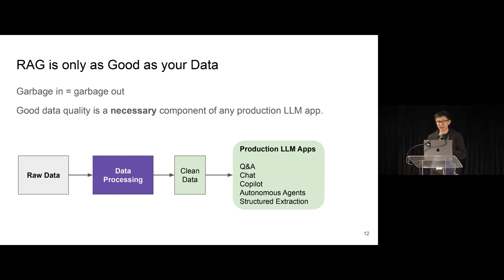One of the first principles that I think we believe in is basically this idea of garbage in, garbage out. It's a principle that's true in ML. And it's also a principle that's true in the case of LLM app development. Good data quality is a necessary component of any production LLM app. And if you don't have the right data processing layer, just very generically, you're not going to get clean data. And then if you don't have clean data, LLMs are going to have a hard time figuring out how to actually give you back good response quality, even for very powerful LLMs today.